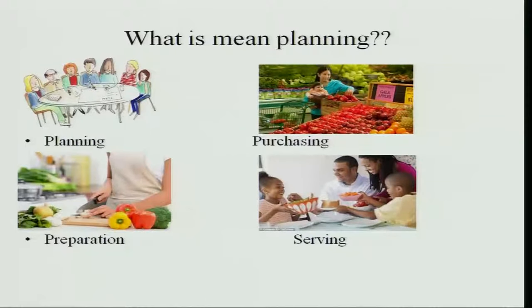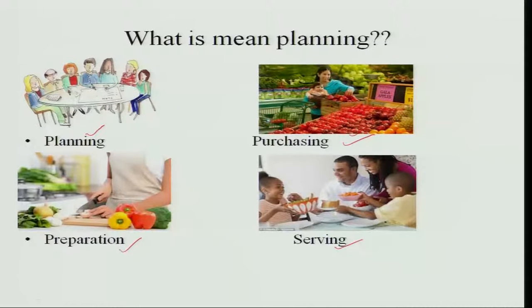Meal planning involves planning, purchasing, preparation and serving. You can see here the entire group is sitting for planning a meal — if it is a family, the entire family can sit together, discuss and plan a meal together. For purchasing, you better go to a wholesale shop so you get variety and the cost will be reduced. For preparation, you plan beforehand and combine various foods. Serving is also important; the entire family should sit together and have at least one meal a day, and the way you serve makes a lot of difference in eating the food.